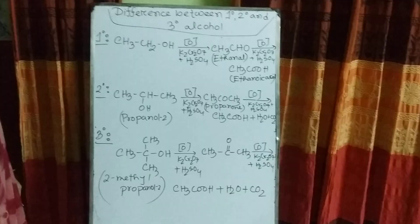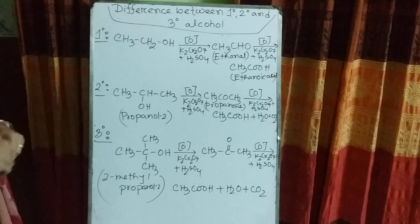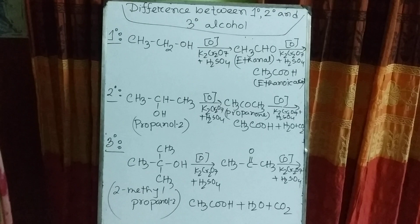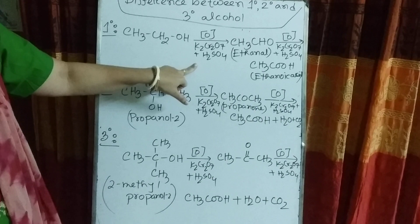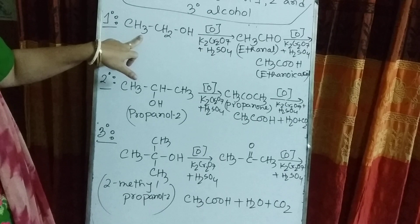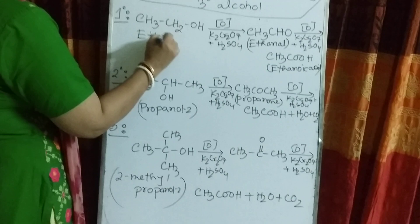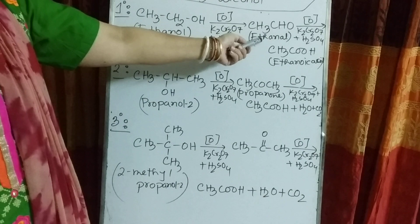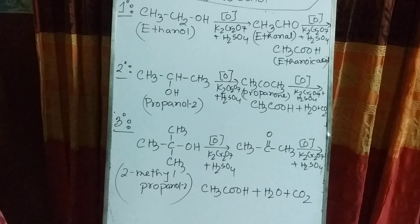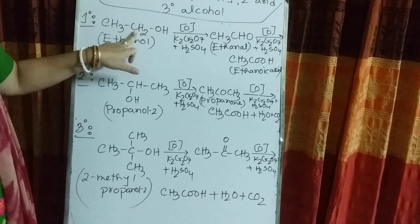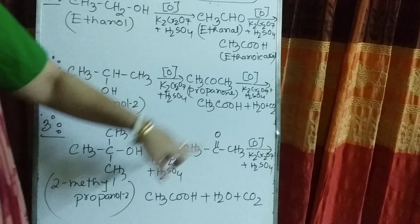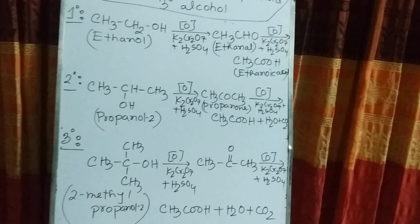Now I will give you the difference between 1°, 2°, and 3° alcohol by oxidation reaction, where potassium dichromate and sulfuric acid are used as the oxidizing agent. For primary alcohol, I have taken ethanol. When ethanol is oxidized, it converts to ethanal, which again oxidized converts to ethanoic acid. The carbon number remains the same — 2 carbons throughout — so carbon number is not changed in the oxidation of primary alcohol.